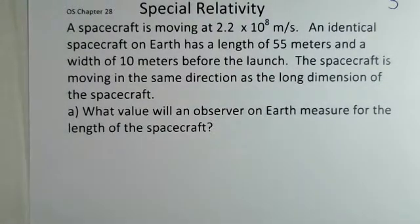Moving lengths are shorter than lengths that are at rest with respect to the observer. Here we have a spacecraft at 2.2×10⁸ m/s. The spacecraft is built in mass production, so there's an identical spacecraft on Earth. And before this one would go off into space, it has a length of 55 meters and width of 10 meters. Those are dimensions.